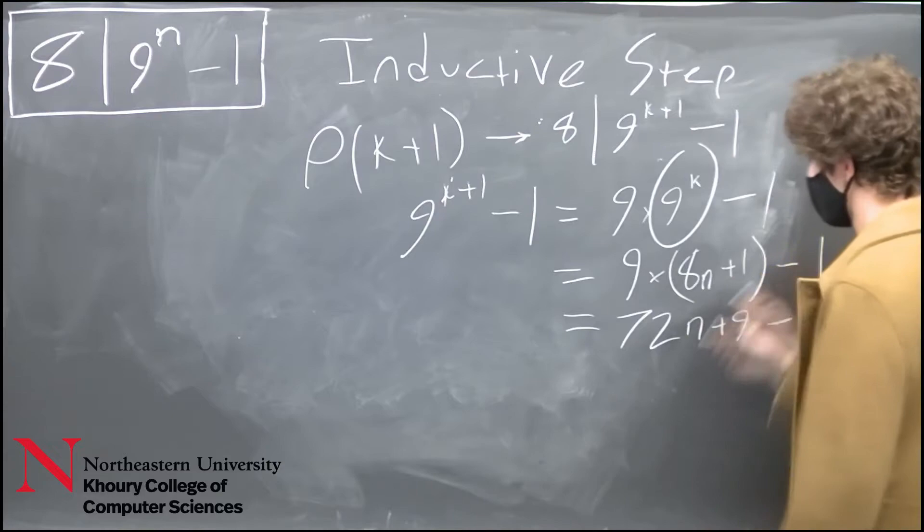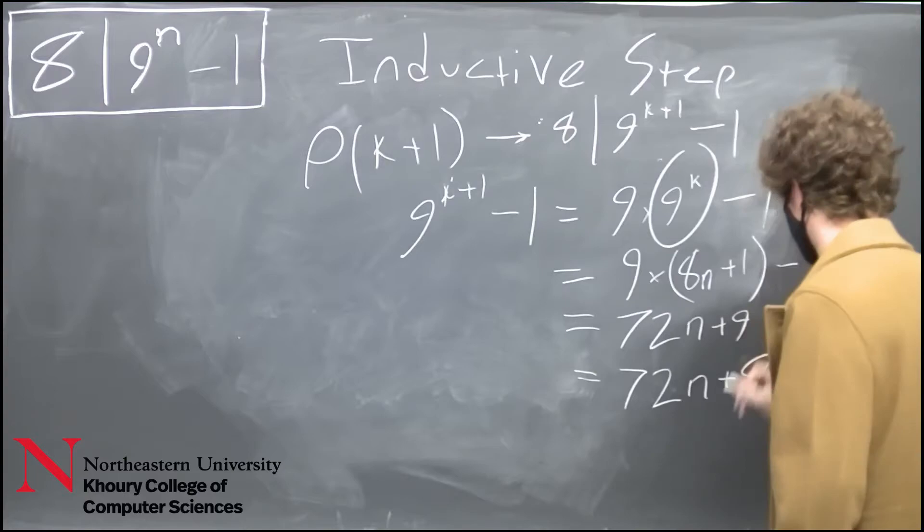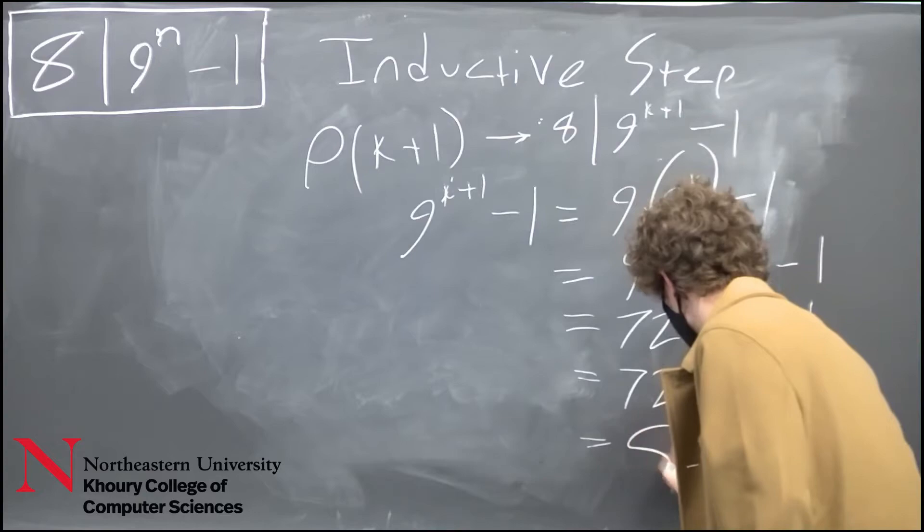Which of course by addition simplifies to 72n plus 8. If we divide this by 8, we get 8 times the quantity 9n plus 1.